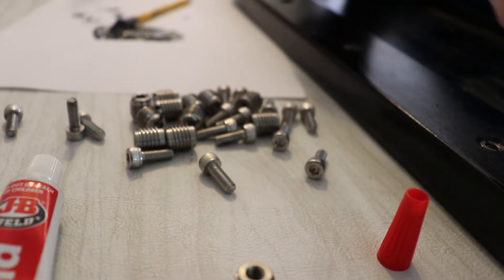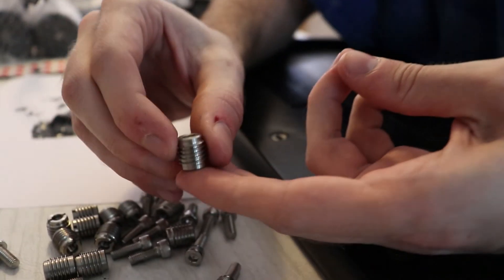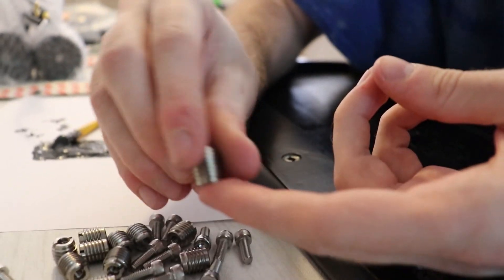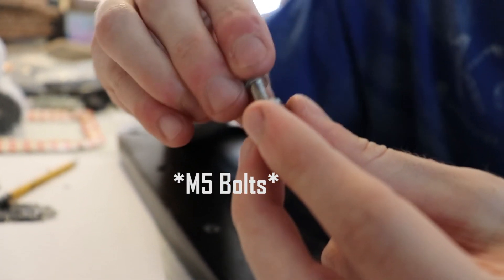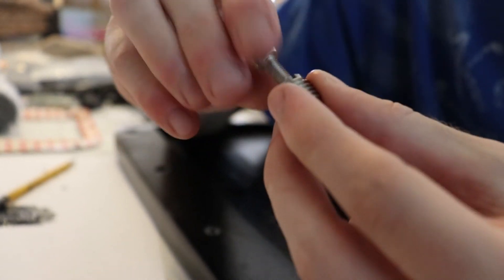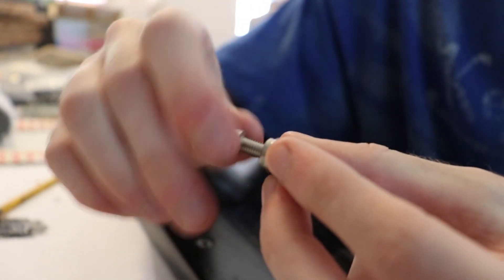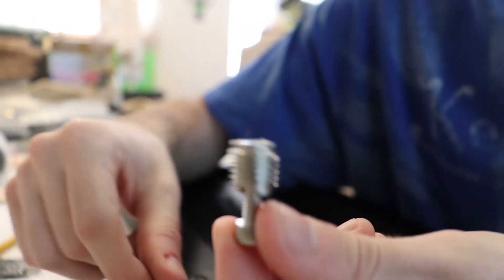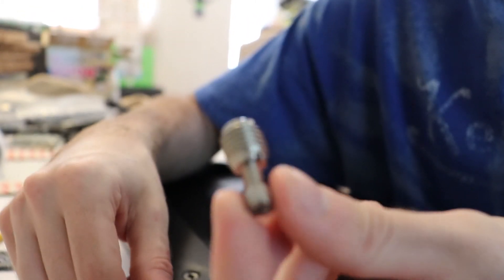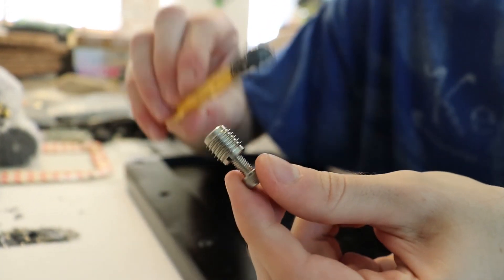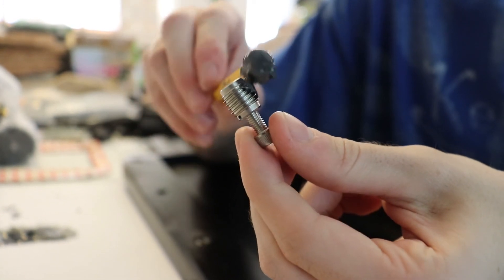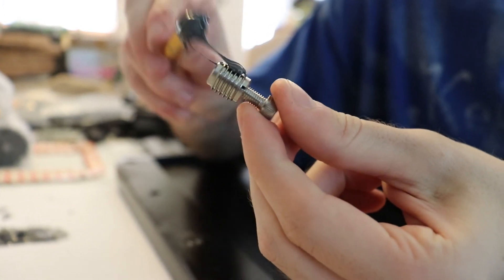What I'm doing is taking these threaded inserts—they have a hole in them—and I'm taking one of the M4 bolts and screwing it into the top just a little bit. I'm going to use this to hold the insert while I apply epoxy to it. This way I'm avoiding getting epoxy on my hands while still getting the job done.